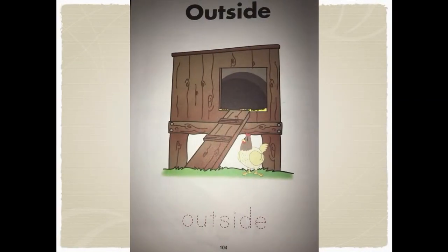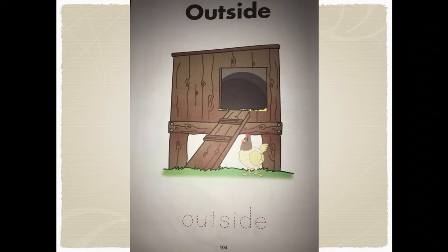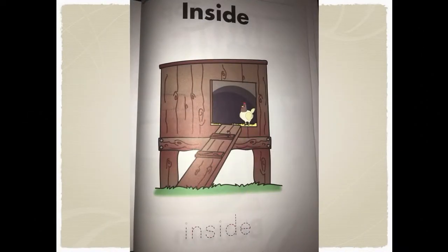On page 104, we are going to trace the letters O-U-T-S-I-D-E, outside. And look at the hen — is it inside the hen house or outside? Excellent KG1, outside. Also on this page, we are going to trace the letters I-N-S-I-D-E, inside. And look at the hen — is the hen inside the hen house or outside? Inside. Excellent KG1.